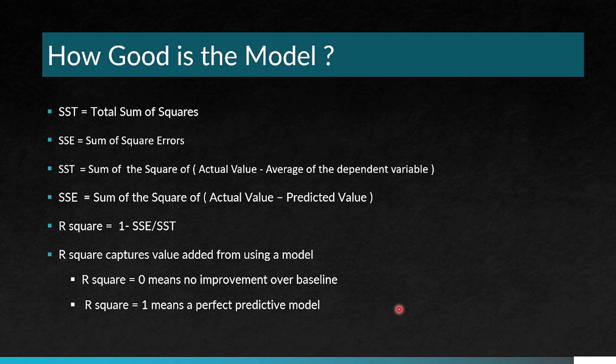SST is the total sum of squares and SSE is the sum of square errors. SST is the sum of square of the actual value minus the average of the dependent variable. SSE is the sum of the square of actual value minus the predicted variable. R square is 1 minus SSE by SST. When R square is 0, it means there is no improvement over the baseline because this average is a baseline. R square 1 means a perfect predictive model.